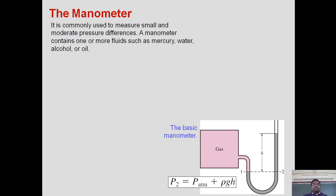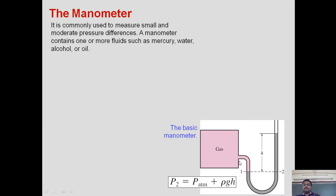Next is the manometer. A manometer is a device used for measuring the pressure at a point or at two different locations. There are two kinds of manometers: one is called a single-point manometer, which measures the static pressure at a single point. The first diagram represents the simple U-tube manometer, in which one end is fixed to the system where we want to measure pressure and the second end is open to the atmosphere.